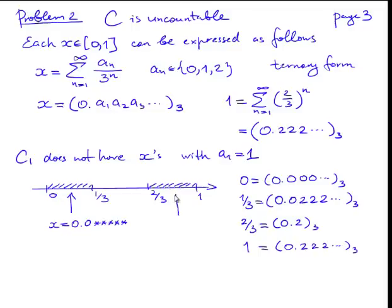What about 2/3? 2/3 can be written as 0.2 in the same ternary form. In other words, in this interval we have x's of the following form: 0.2 and then again the rest can be composed of any digit between 0 and 2. So C1 doesn't have x's for which A1 is 1.